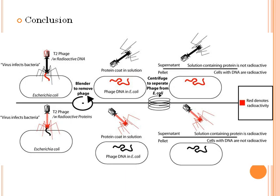To summarize, the Hershey-Chase experiment demonstrated that DNA is the transforming principle and the hereditary material by showing that phage DNA moves into the bacterial cell during the course of infection and that the ability of phage to replicate is dependent on the transfer of DNA into the bacterial cell. Protein plays little role in the process of phage replication, but is important for phage DNA to enter into the bacterial cell.